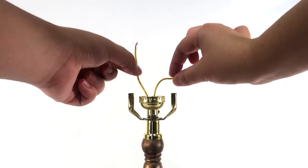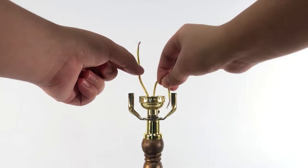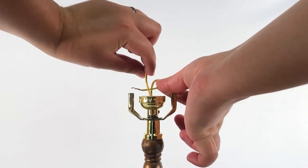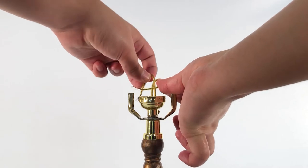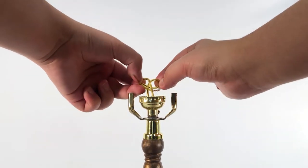Tie the ends of the lamp cord together using an electrician's knot. This keeps the cord from coming loose if the cord gets yanked or pulled too hard.